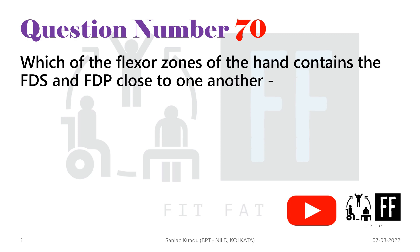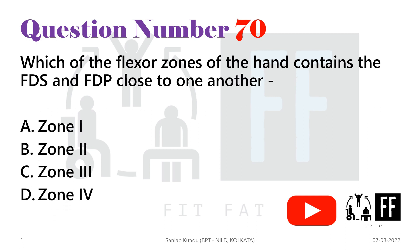Question number 70: which of the flexor zones of the hand contains the FDS and FDP close to one another? To answer this question, we first need to know the different flexor tendon zones of the hand.